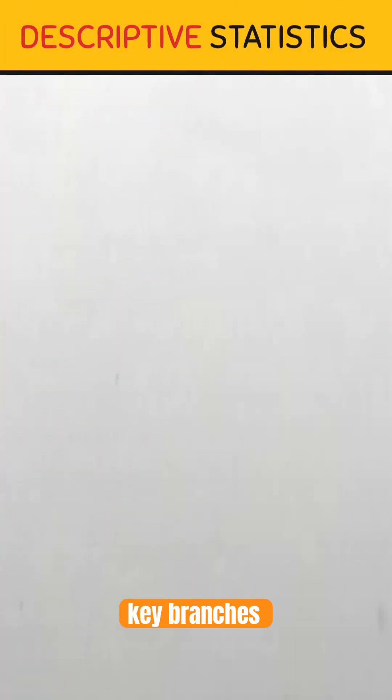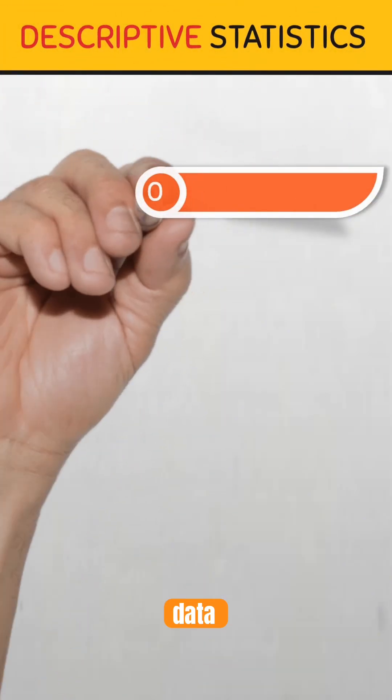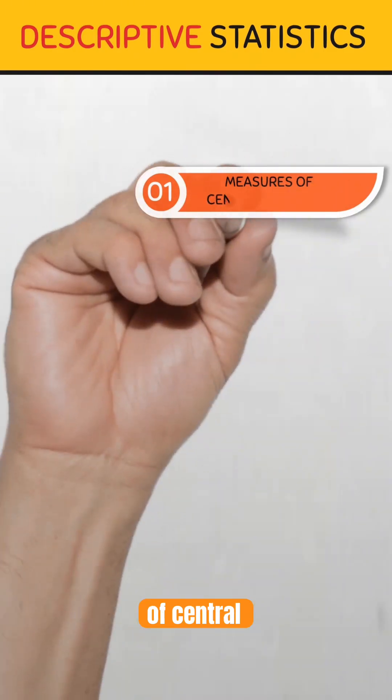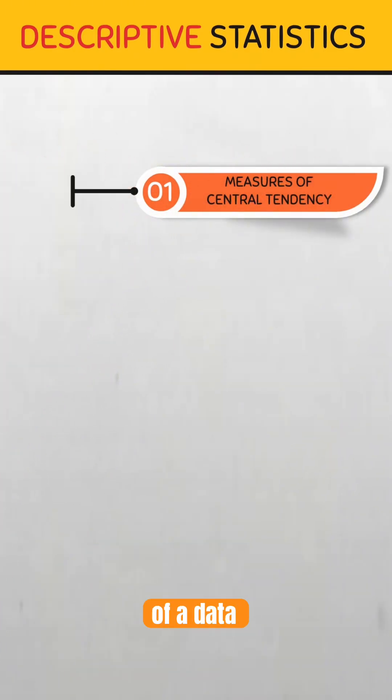Descriptive statistics has several key branches that help summarize and interpret data effectively. Number one, measures of central tendency. These help to identify the center of a data set.